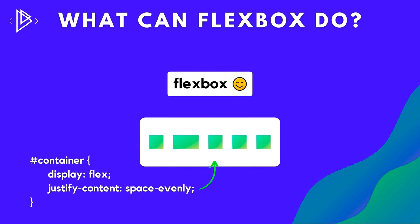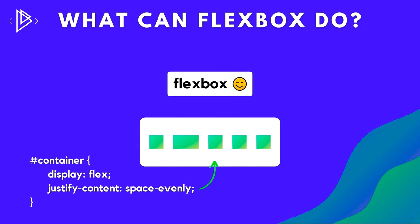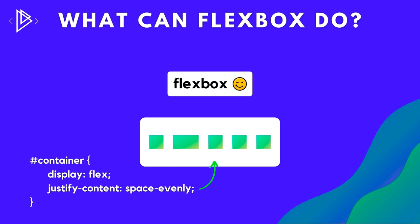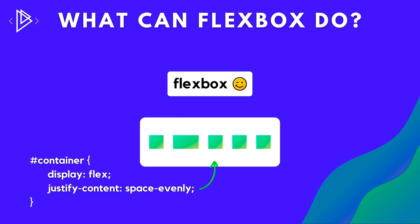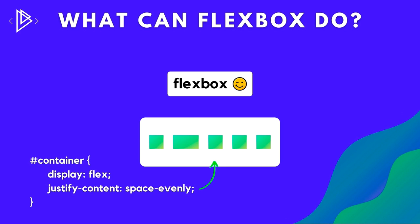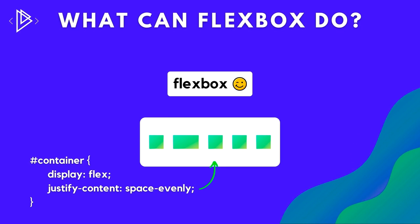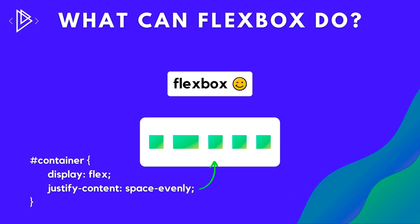Here's an example using Flexbox on a container — we've set display flex and then justified the content using space-evenly. With just two simple lines we've controlled our items by spacing them out evenly, all done using the power of CSS Flexbox.